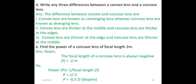Write any three differences between a convex lens and a concave lens. 1. Convex lenses are known as converging lenses, whereas concave lenses are known as diverging lenses. 2. Convex lenses are thicker at the middle, while concave lenses are thicker at the edge. 3. Convex lenses are thinner at the edge, while concave lenses are thinner at the middle.